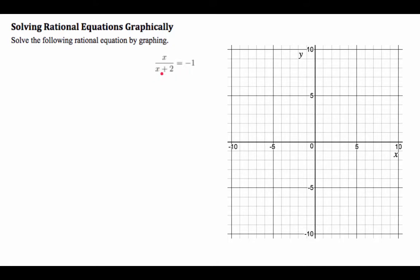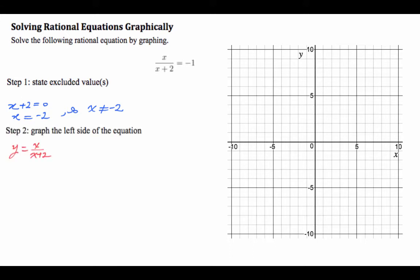One thing you could do is on your graphing calculator, set y1 equal to the left hand side, and then set y2 equal to negative 1. But before you do that, notice that because we have a fraction, if you look at the denominator, x cannot be negative 2. The denominator will be 0 and give you an undefined value. So we always start with finding the excluded values for any rational expression.